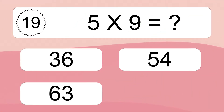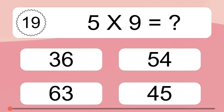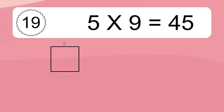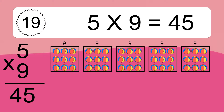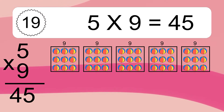5 times 9 equals what? 5 times 9 equals 45. We have 5 boxes, and each box has 9 colorful balls inside. If you count all the balls in all the boxes together, you will have 5 times 9 balls. This equals 45 balls.